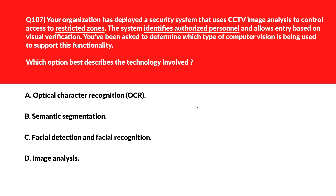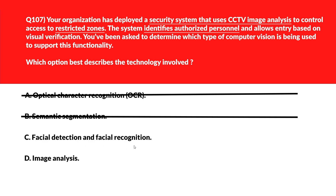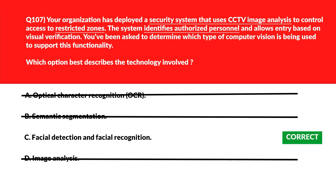Let's tackle a real-life scenario: a security system using CCTV image analysis to control access in restricted zones. Option A is OCR — OCR is designed to read and digitalize text from images, not to identify human faces, so this is out of context. Option B says Semantic Segmentation — useful for labeling objects at a pixel level but doesn't involve identifying or verifying individuals, so incorrect. Option C says Facial Detection and Facial Recognition — used in identification systems where a person's face is detected and matched against known staff members for access control, so let's keep this.